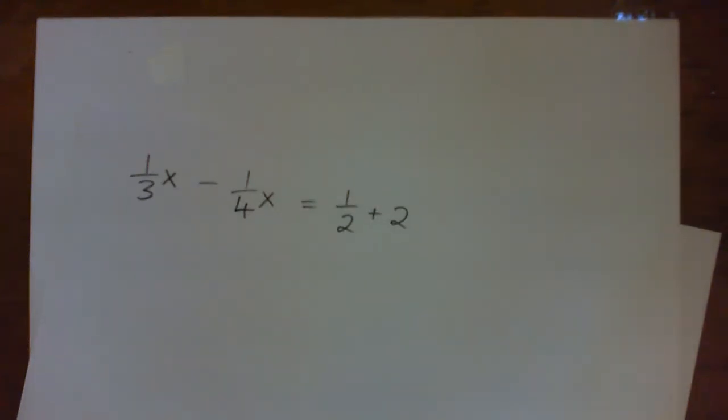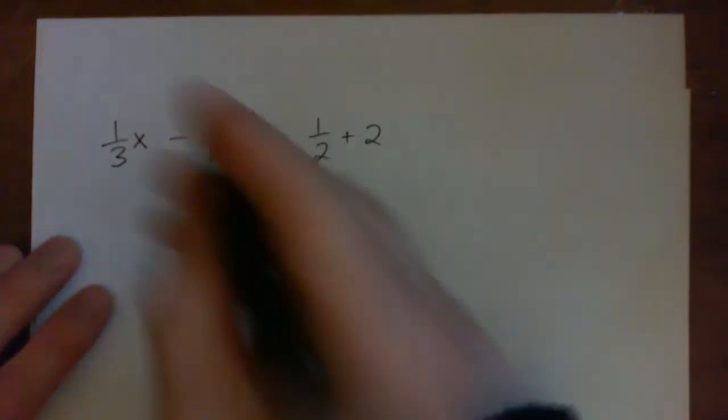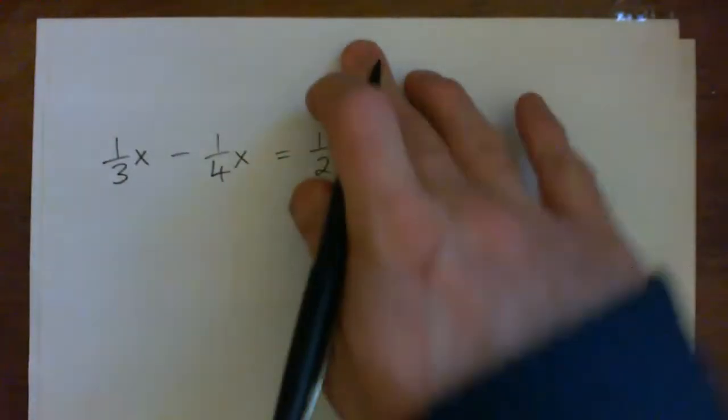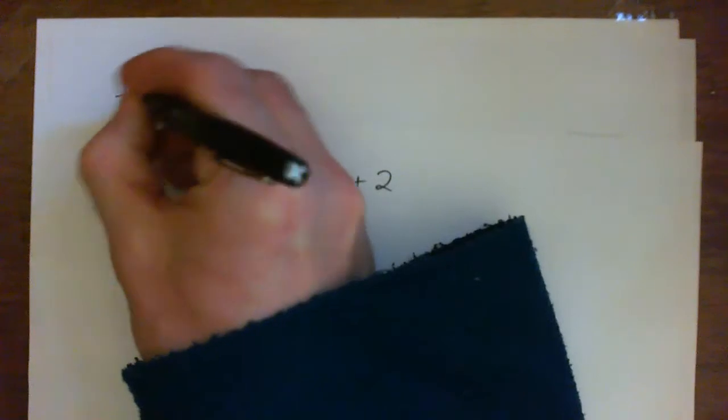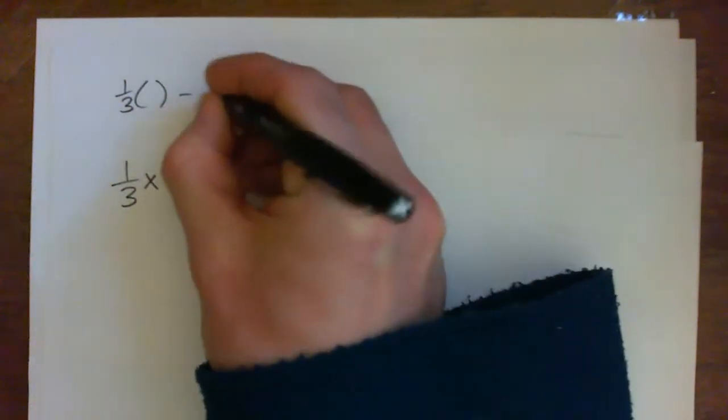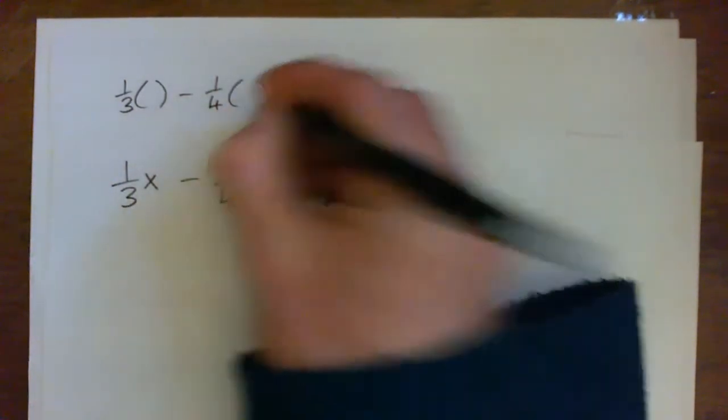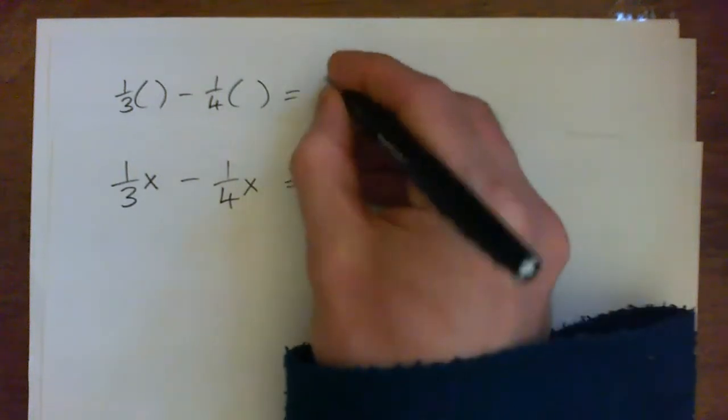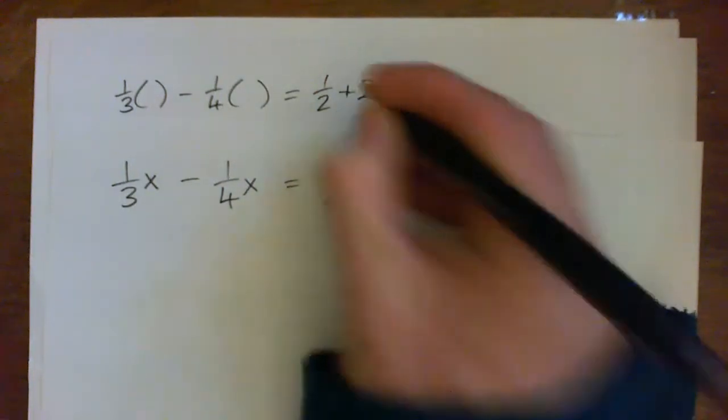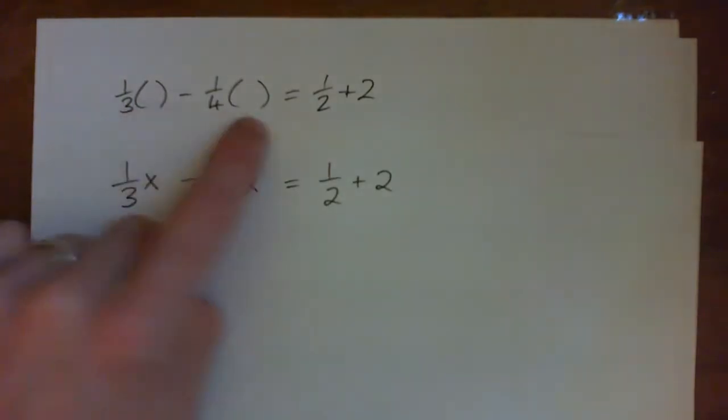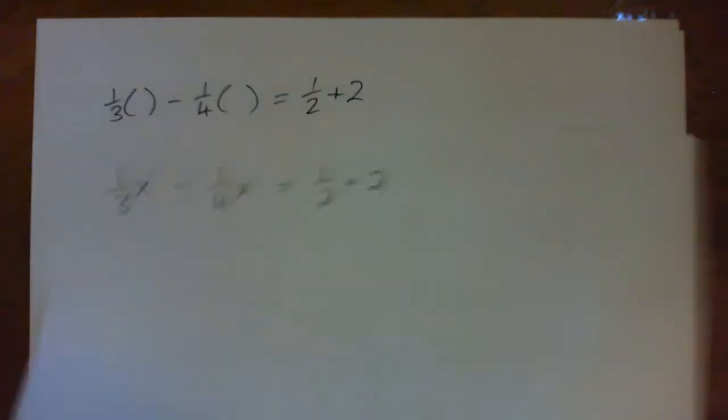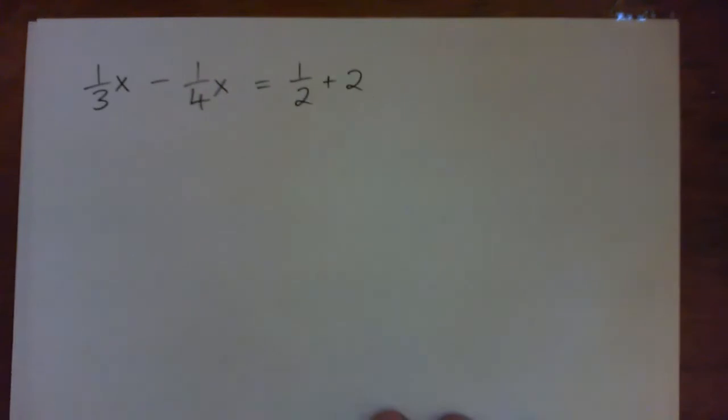At the end if I check this I would plug in one third times parenthesis the number, minus a quarter times parenthesis the number, and that would equal a half plus two. Whatever number it has to be, the same number I plug into here and both sides will be equal. Let's go ahead and solve this.